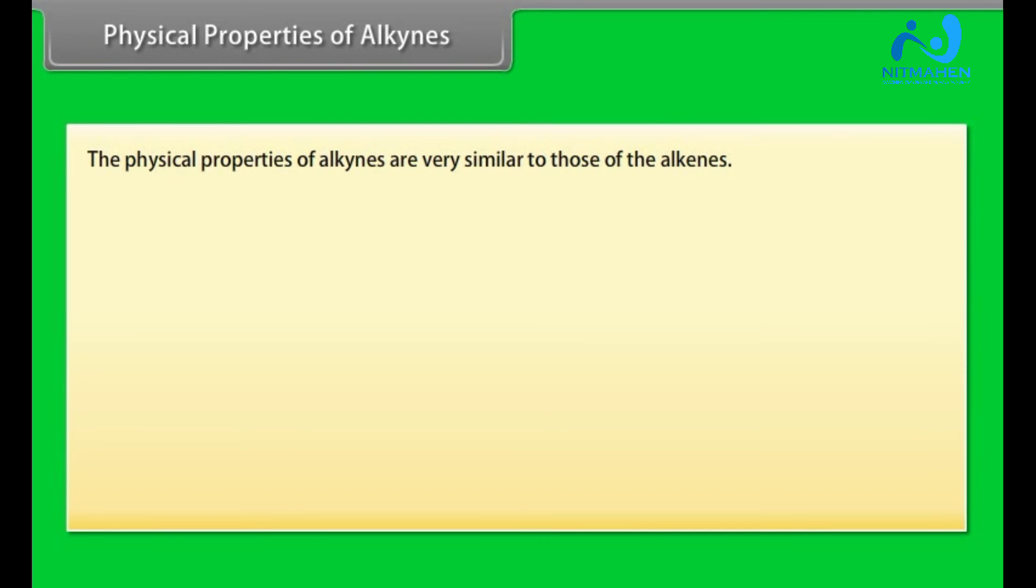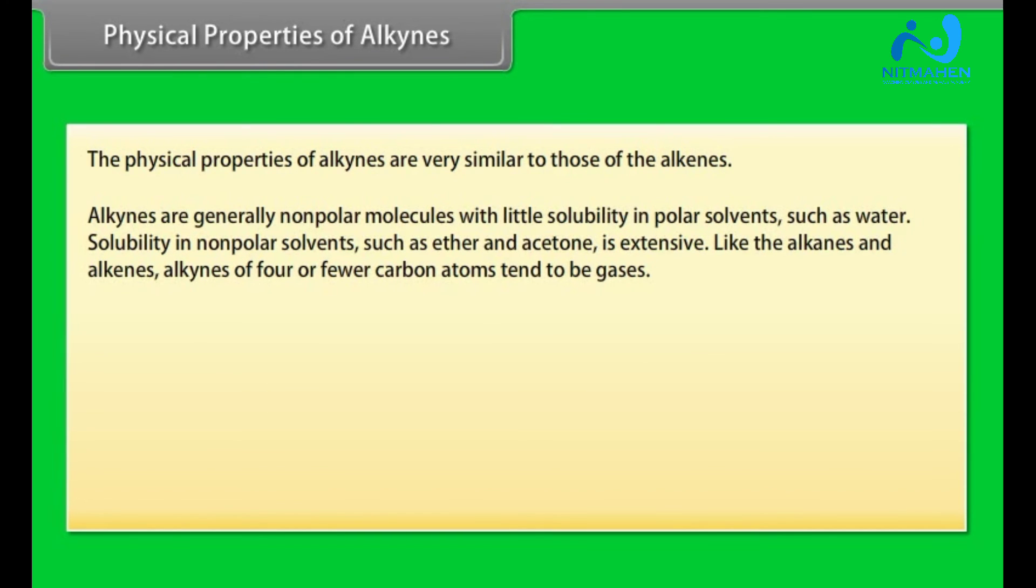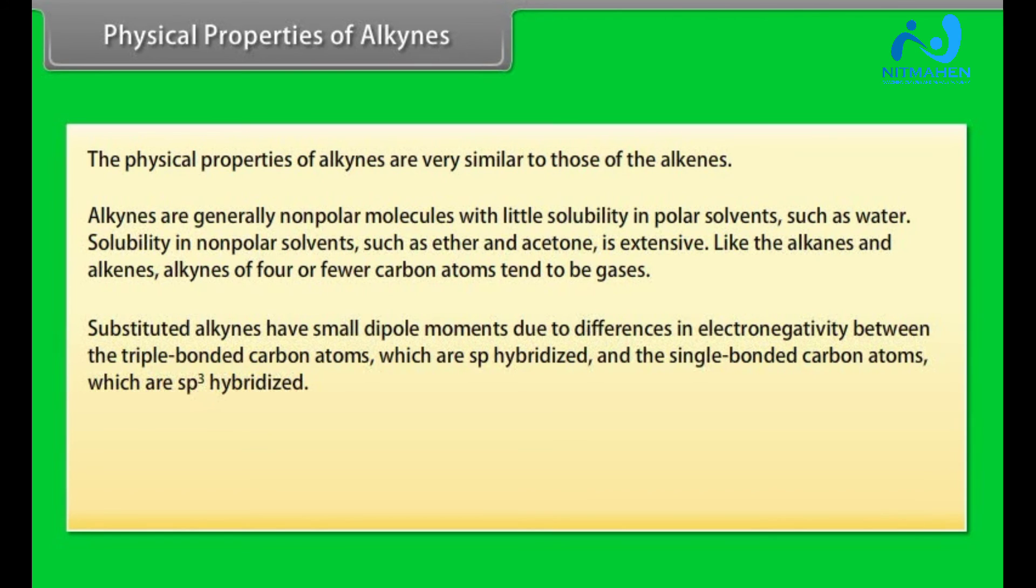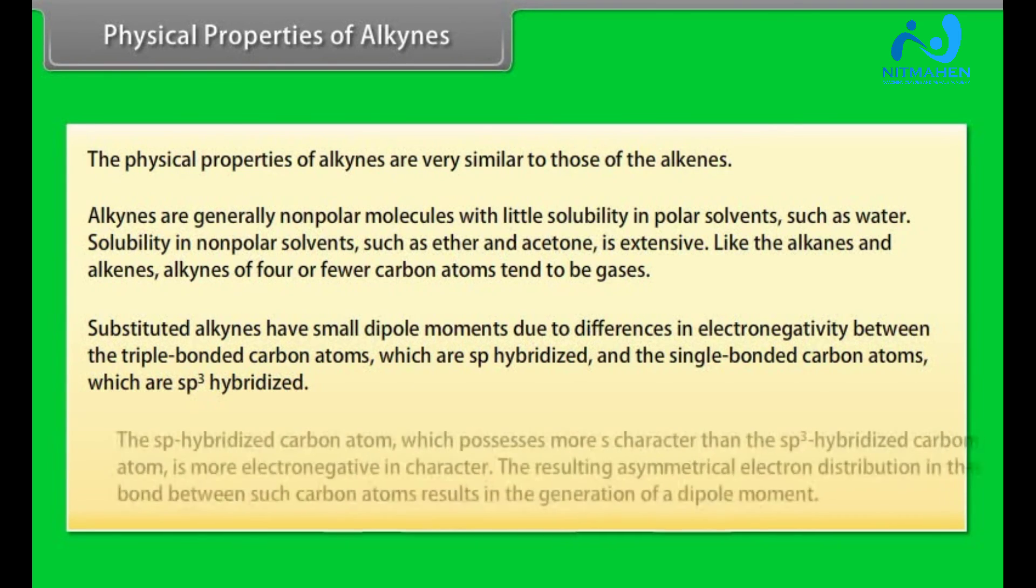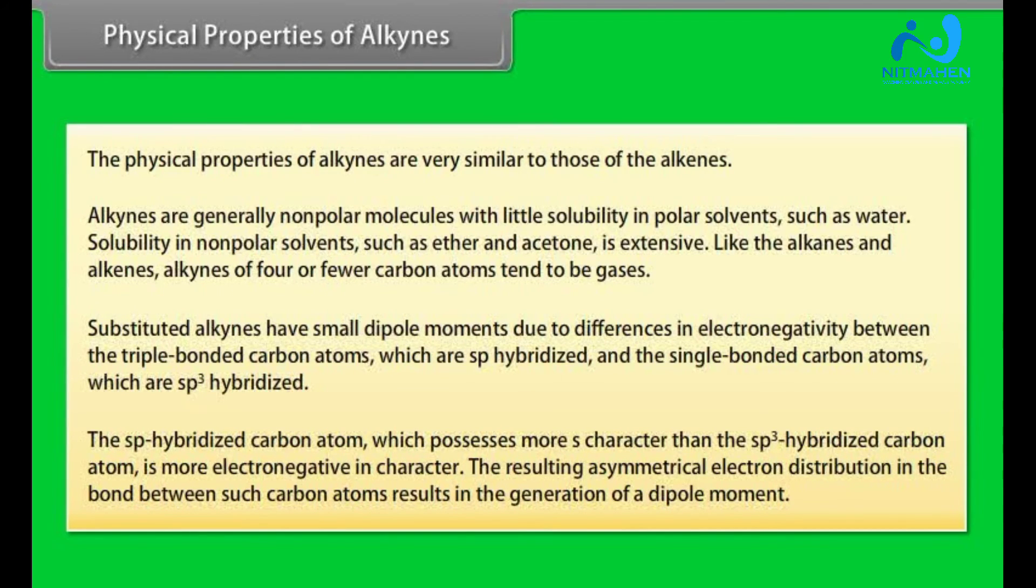Physical properties of alkynes. The physical properties of alkynes are very similar to those of the alkenes. Alkynes are generally non-polar molecules with little solubility in polar solvents, such as water. Solubility in non-polar solvents, such as ether and acetone, is extensive. Like the alkanes and alkenes, alkynes of four or fewer carbon atoms tend to be gases. Substituted alkynes have small dipole moments due to differences in electronegativity between the triple bonded carbon atoms, which are SP hybridized, and the single bonded carbon atoms, which are SP3 hybridized. The SP hybridized carbon atom, which possesses more S-character than the SP3 hybridized carbon atom, is more electronegative in character. The resulting asymmetrical electron distribution in the bond between such carbon atoms results in the generation of a dipole moment.